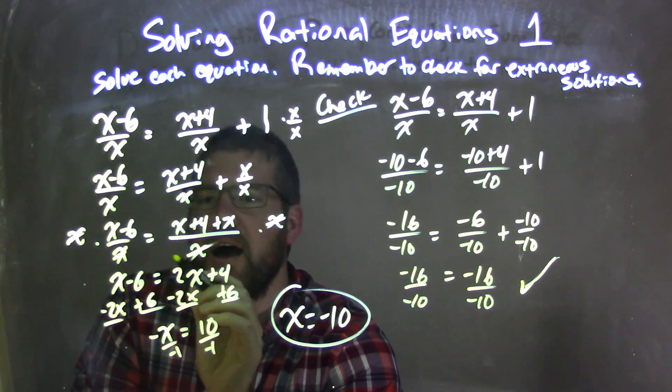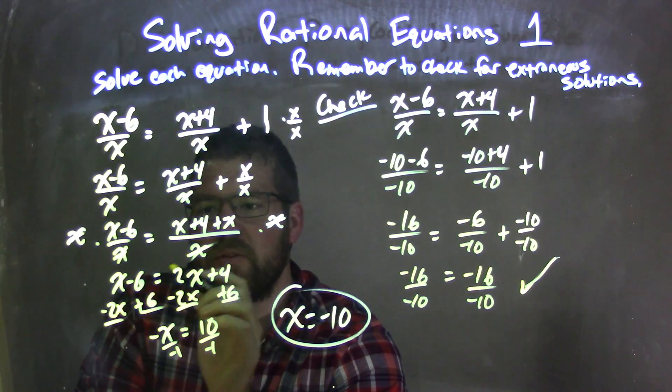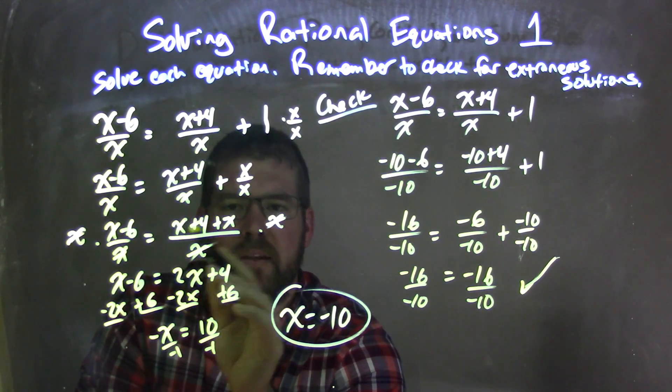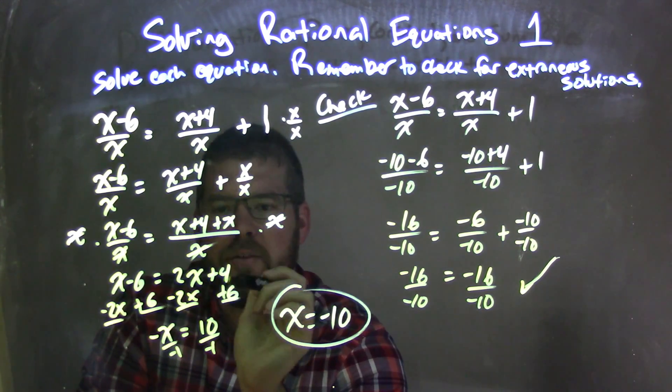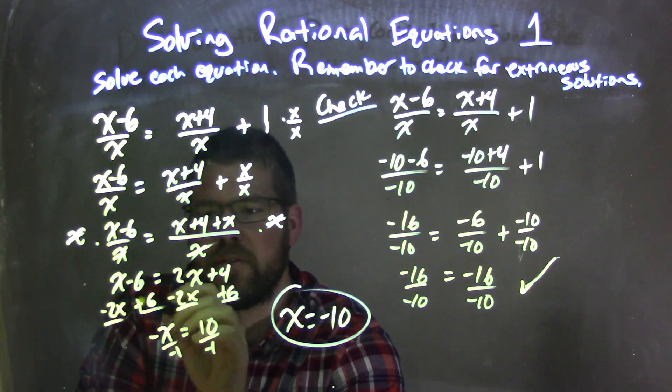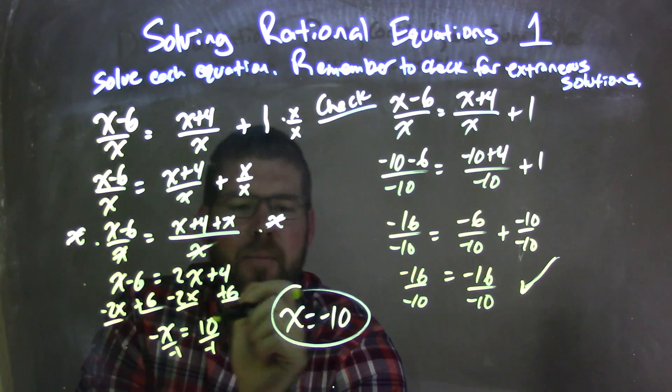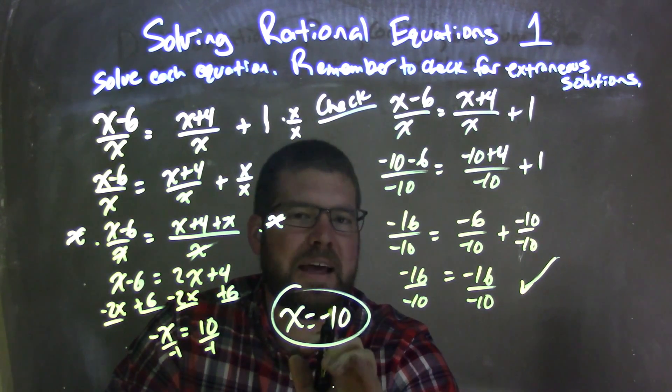So give me x plus 4 plus x over x on the right, and still x minus 6 over x on the left. Multiply both sides by x. Eliminate the x's on the denominator on both sides. It's going to be x minus 6 equals, and then this side here, 2x plus 4 combined into two x's. I then subtract 2x to both sides, add 6 to both sides, giving me negative x equals positive 10, divided by negative 1, and I got x equals negative 10.